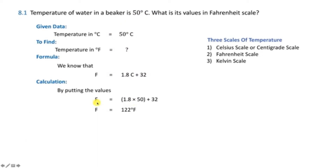The first problem: the temperature of water in a beaker is 50 degrees Celsius. What is the value on the Fahrenheit scale? We have very good methodologies for conversions. We have seen three conversions: Celsius to Kelvin, Kelvin to Celsius, Fahrenheit to Kelvin, and Kelvin to Fahrenheit. We have done a lot of details with examples.